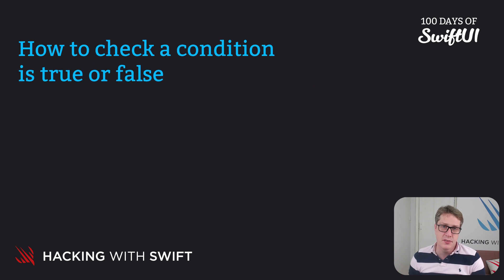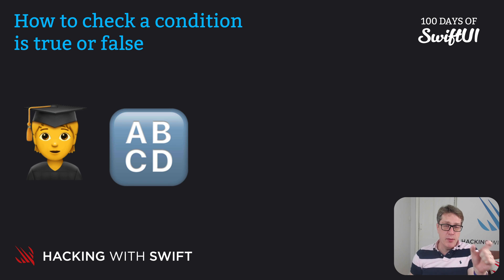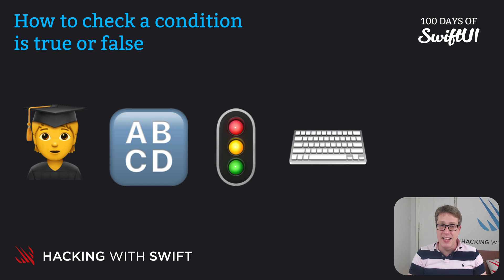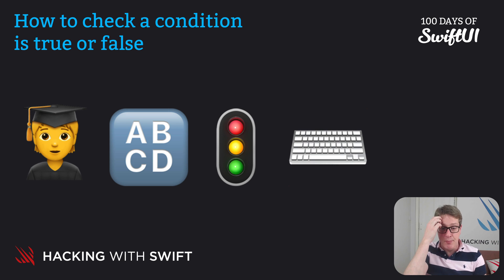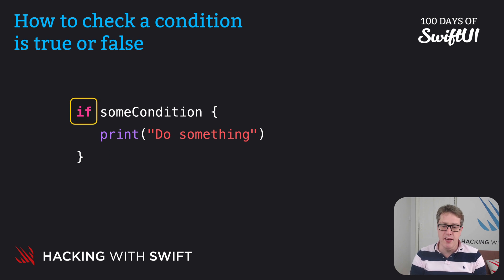Programs very often make choices. For example, we might say: if a user has an exam score over 80, print a success message; or if the user's name comes after a friend's name alphabetically, print the friend's name first. Swift handles all these things with if statements, which let us check a condition and run some code if that condition is true. They look like this: if some condition, print do something.